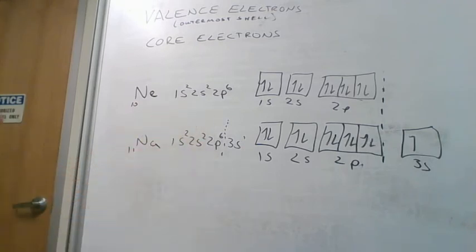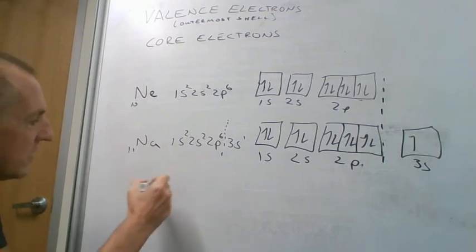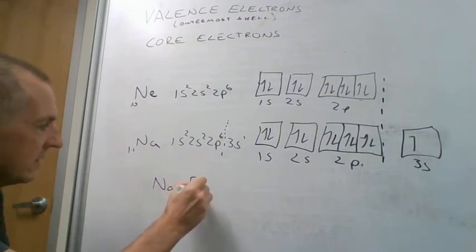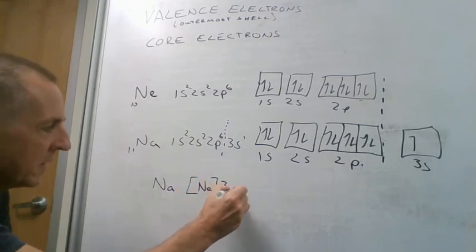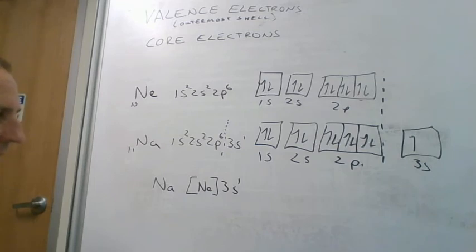So what we can do is do a shortcut. If we want to do the electronic configuration of sodium, what we can do is just say, well, it's the same as neon, because it has those core electrons, and then it is 3s1 on top of that. So we're saying its electron configuration is the same as neon, so we're not going to write it out, and then its valence electrons are this 3s1. And so that would be the way of doing what's called the noble gas shortcut.